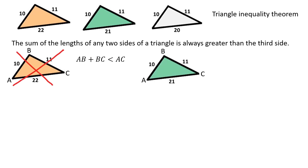Let's check the green shape. The sum of AB and BC is equal to AC. Therefore, we can't form a triangle with these parameters either.